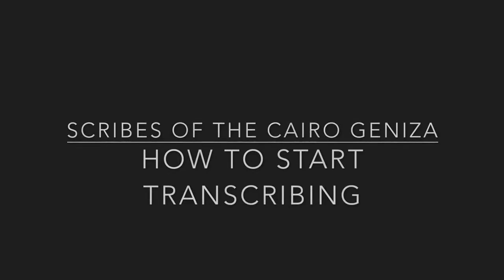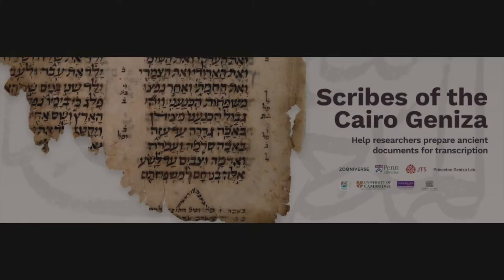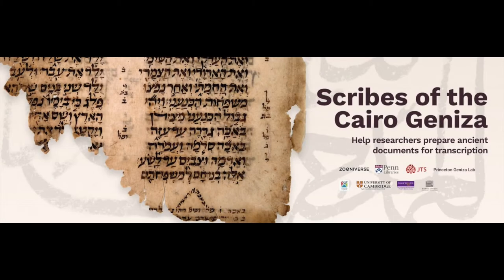Hello everybody! This is Emily Esten. I'm the Judaica Digital Humanities Coordinator at Penn Libraries. Welcome to Scribes of the Cairo Geniza, an international collaboration led by Penn Libraries in partnership with universities, libraries, and scholars to sort and transcribe thousands of medieval fragments.